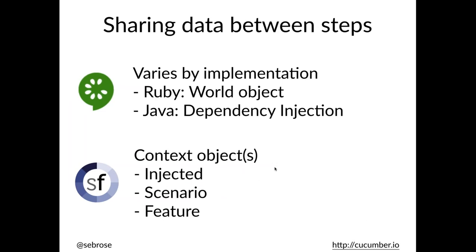There comes a time when your glue code becomes large — you'll have a large domain, lots of features, lots of scenarios — and at that point you'll have more than one step definition file and more than one class that your glue code lives in. Then you'll need to share stuff between your step definitions. Cucumber in Ruby has a different way of sharing that state from the Java world, and Specflow has other ways as well. This is a low-level implementation detail of interest mainly to developers, but it is a significant difference and something people need to be aware of.